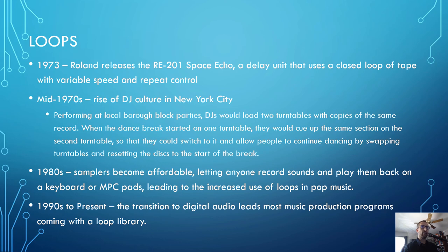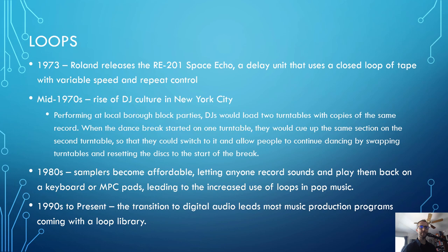The Space Echo is a delay unit that uses a closed loop of tape with variable speed and repeat controls. You would record something, and it would endlessly loop at whatever speed you set it at. In the 70s, you also have the rise of DJ culture in New York City, where DJs performing at local block parties would load two turntables with copies of the same record. You'd get to the dance break on one turntable, and then switch to the second turntable — which had the same section queued up — on the mixer, hoping not to drop a beat or add one, keeping a smooth transition.